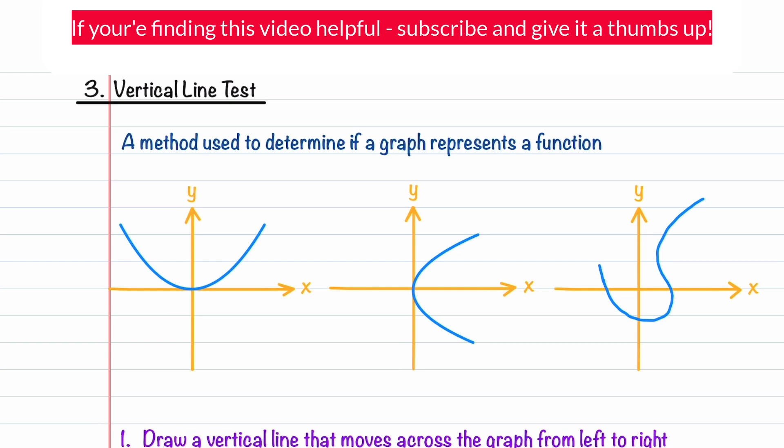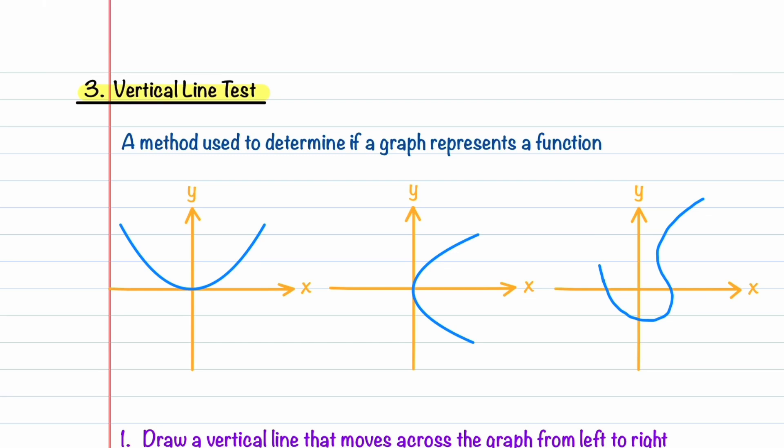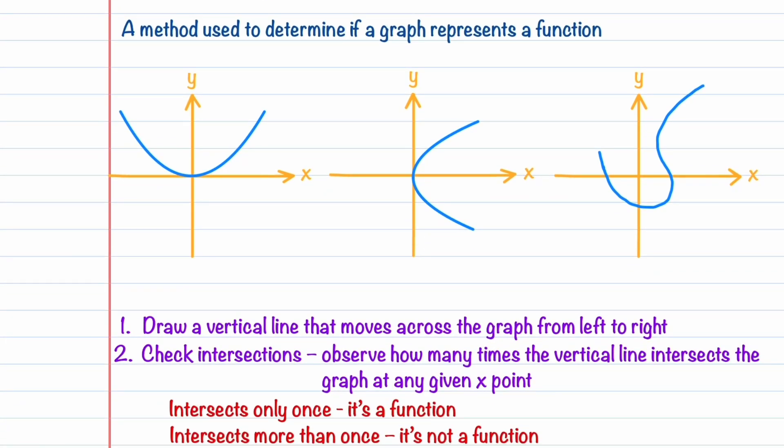Let's now talk about one of the quickest ways to check if a graph represents a function, the vertical line test. Here's how it works. The first thing that you do when doing the vertical line test is you're going to draw a vertical line that moves across the graph from left to right. Let's look at our first graph and let's do that. Going from left to right, we're going to draw one vertical line, and then we're going to draw another vertical line.